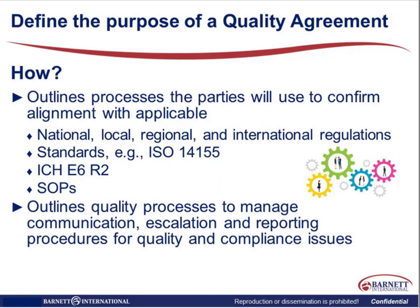So how is that accomplished? The quality agreement outlines the processes that the parties will use to confirm alignment with all the various regulations — national, local, regional, etc. — that are imposed on the clinical trials that we run. It also covers SOPs that will be used to confirm alignments, and as you'll see further along, that may be a combination of both, one or the other, or a hybrid SOP is created. And it outlines the quality processes that'll manage communication, escalation, reporting, and procedures for quality and compliance issues.